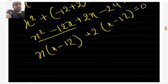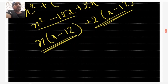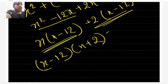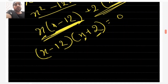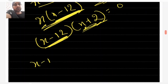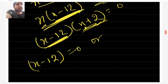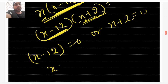Now in both terms you can take (x - 12) as common. So it becomes (x - 12)(x + 2) = 0. Either x - 12 = 0 or x + 2 = 0. So x = 12 or x = -2. This is how you solve a quadratic equation using the factorization method.